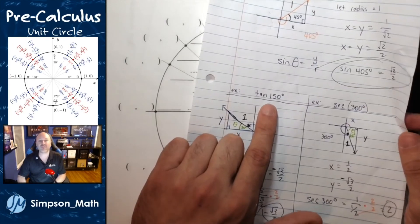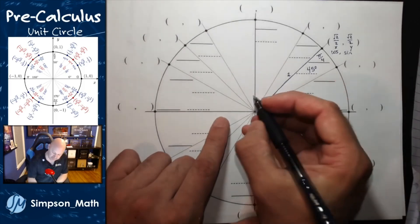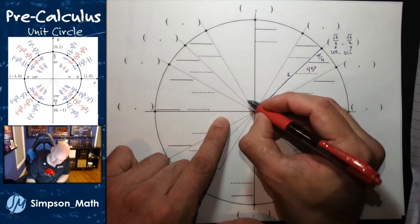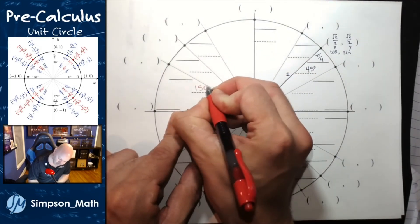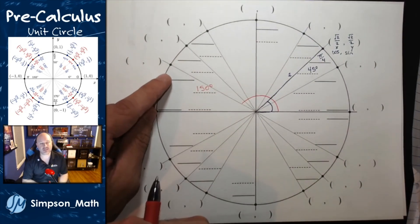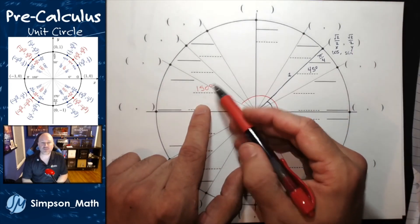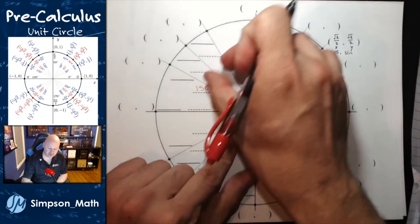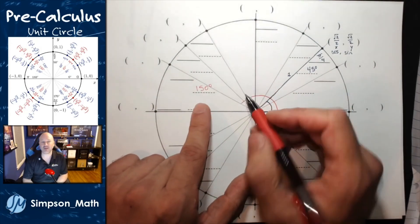We also did 150 degrees. At 150 degrees, that's this larger angle. Now is a good time to talk about converting to radians. This is one of those 30-degree partitions — we have 30, 30, 30, 30, 30, 30. So that's five 30s.